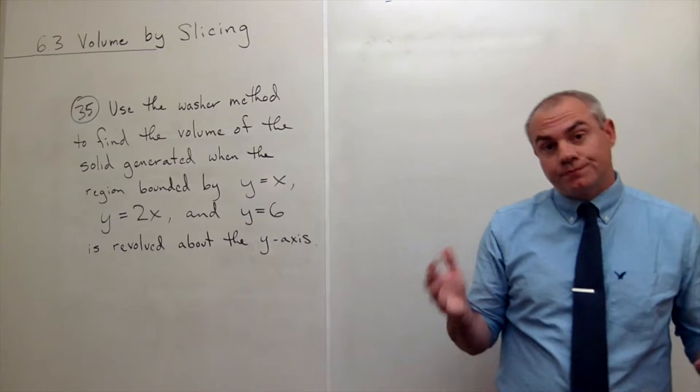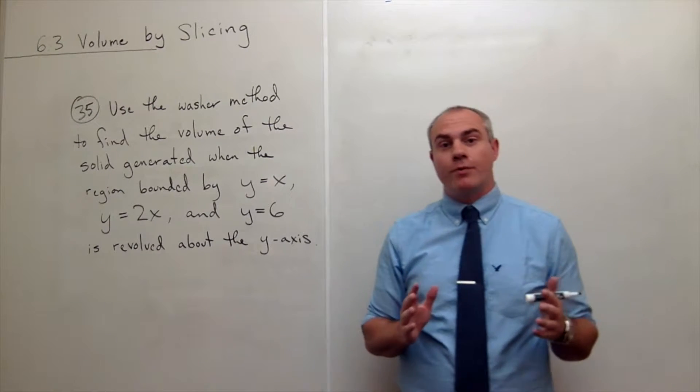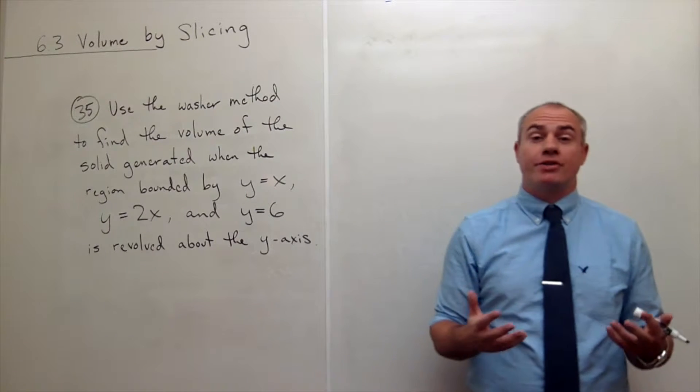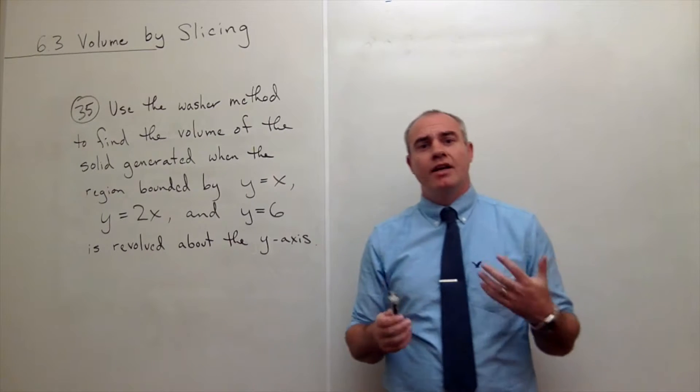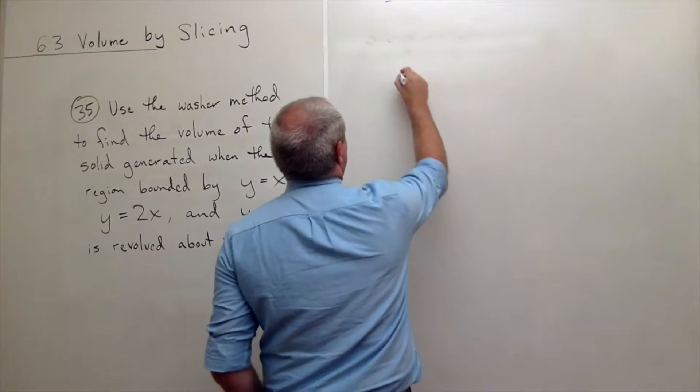So in any disk method, washer method problem, the first thing we want to do is set up a picture of the region to be rotated and get a feel for what it looks like if we did rotate. So let's draw a picture.